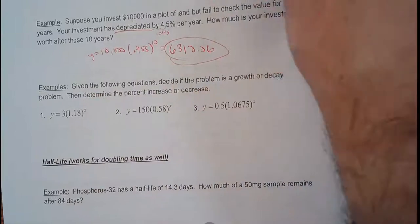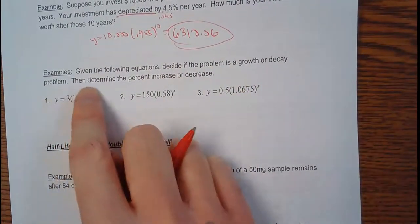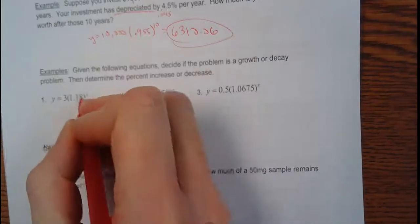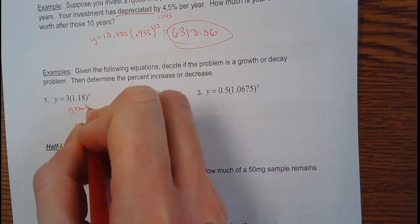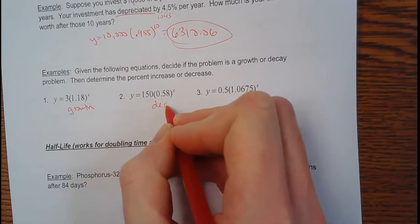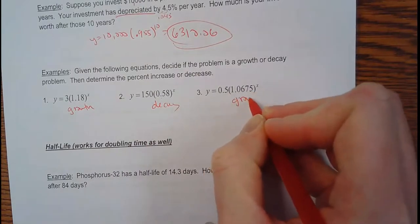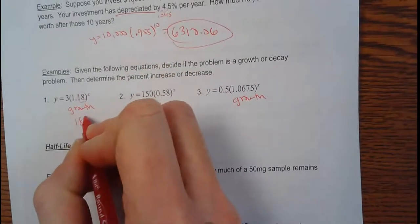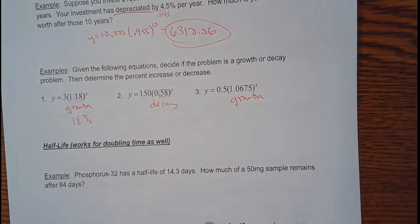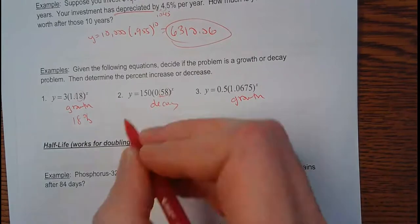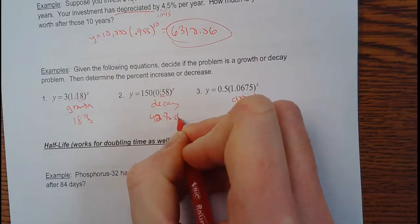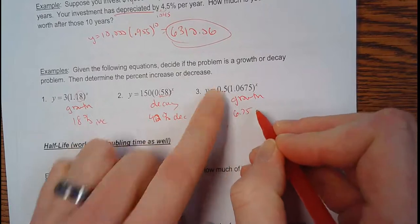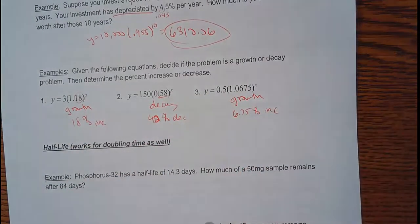Given the following equations, decide if it is growth or decay, and then determine the percent increase or decrease. Remember, if a number is greater than one, this one is greater than one. So, that's growth. This one is less than one. So, that's decay. Greater than one, growth. And when it's growth, the number more than one. So, that's 18. That's an 18 percent increase. 0.58. You kept 58 percent. That means you lost 42. So, 42 percent decrease. That's a decrease. And then, here, anything above one. So, that would be a 6.75 percent increase.